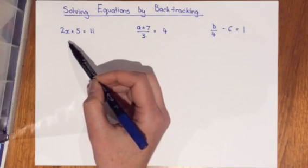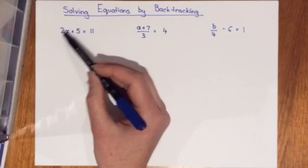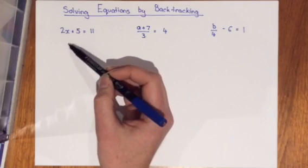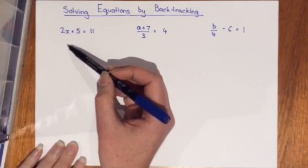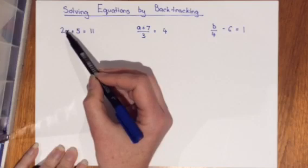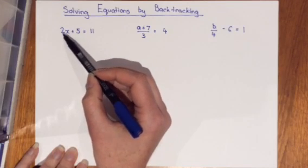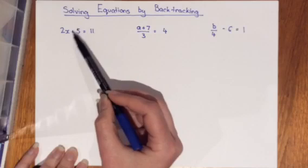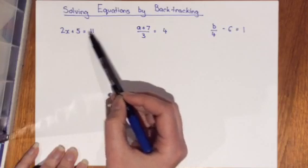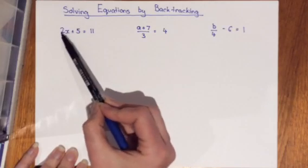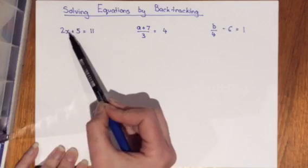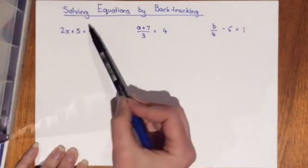To backtrack we are trying to undo what has been done to the x to find the result that would make this statement true. Here we know that 2 is multiplying the x. Remember there's an invisible times in here. Then 5 is being added to give a result of 11. We're going to undo these two operations to find what number would make this statement correct.